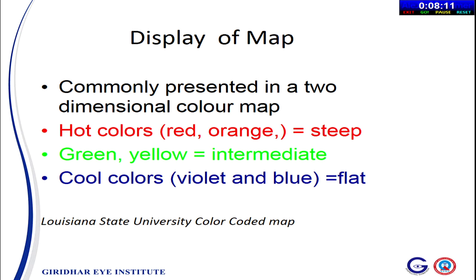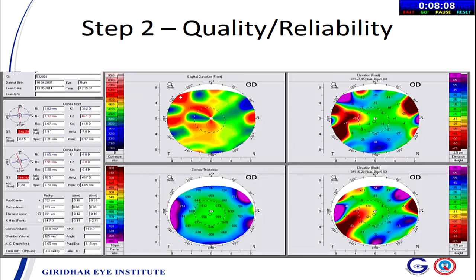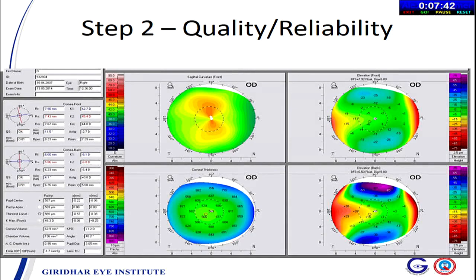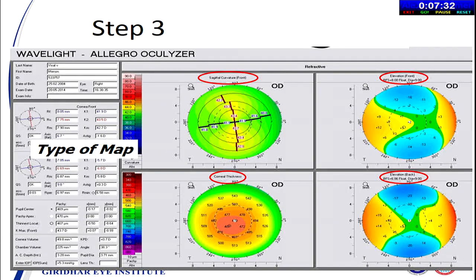Next is always the quality. Some machines like Pentacam have a quality scale — in Pentacam it is color coded. If it is red, the quality is poor — the picture looks bizarre. When the quality is good, it's very smooth. That is the next step. Then third step — start reading the map. What maps are given? It's sagittal or curvature, and that is what a Placido machine gives. The elevation maps come later. Sagittal curvature or axial is used for screening, while tangential or instantaneous curvature picks up finer changes. The sagittal map smoothens out, while the tangential map gives more local changes.